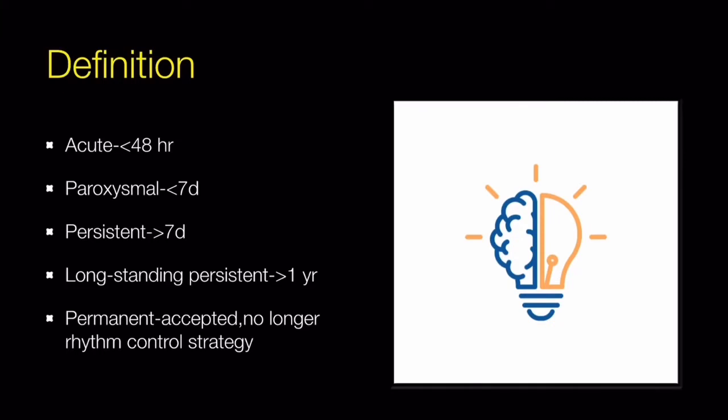When rhythm control strategy has been tried once and failed, or is contraindicated, this is called permanent AF — where we accept that the patient is in atrial fibrillation and will live with this rhythm. In permanent AF, we usually use rate control strategy.